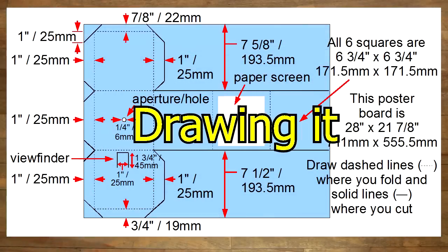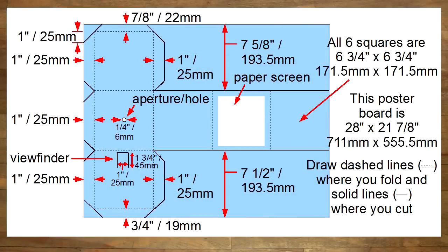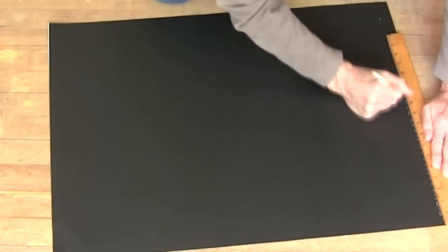Here are all the dimensions. The solid lines are where you'll cut and the dashed lines are where you'll fold. Use the dimensions to draw that onto the poster board.